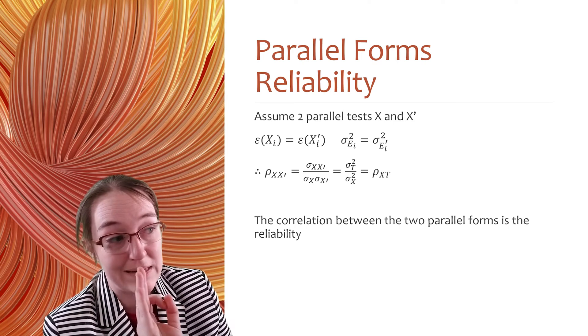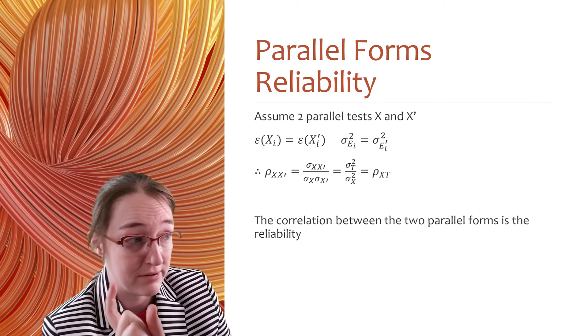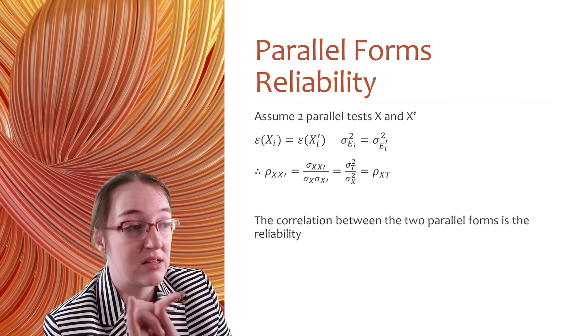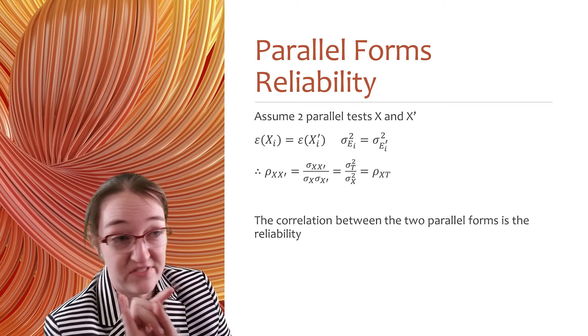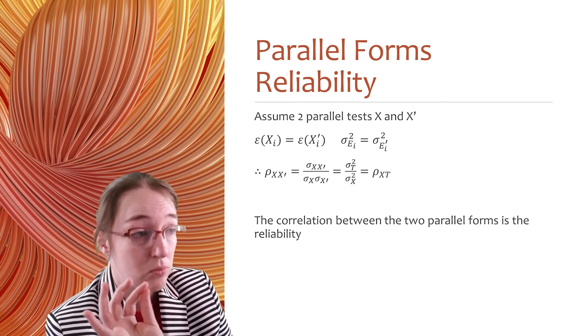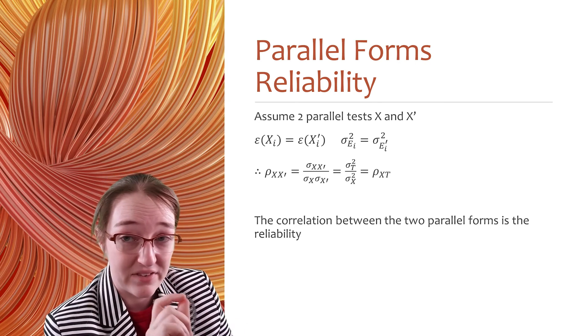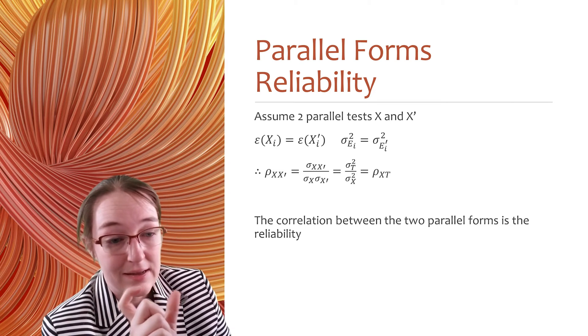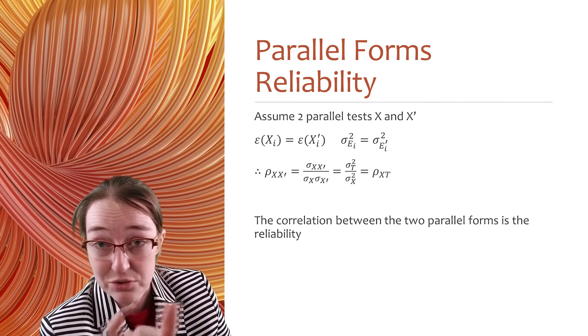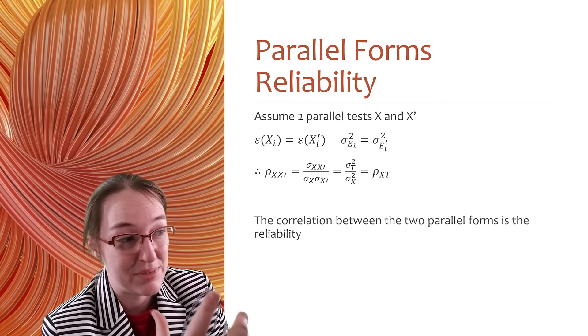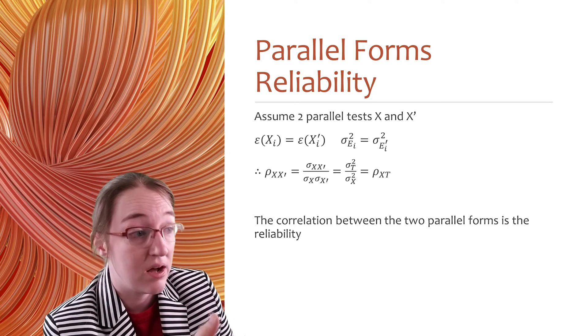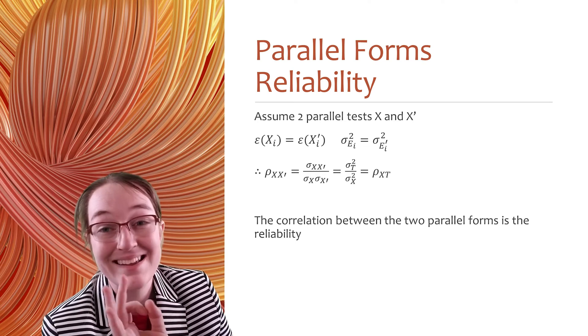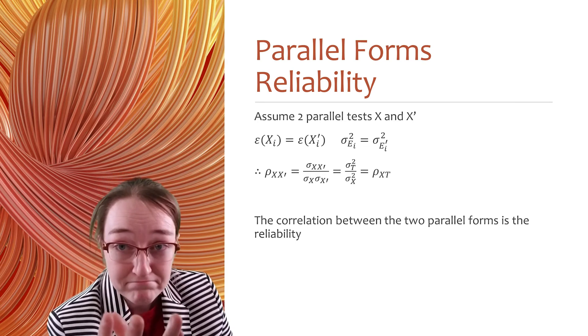So, for parallel forms, we've got x, which is the original, and x prime, which is the parallel. Here, again, we expect that the means will be the same as will the variance. So, we can pop those into our basic model of the covariance of test performance divided by the variance of the two individual forms to give us an estimate, that proportion, that rho, of a true score. And so, in other words, the correlation between the two parallel forms is the reliability, which is kind of nice.